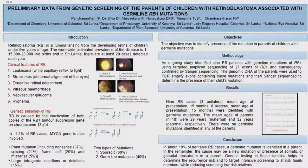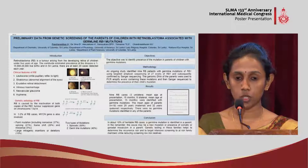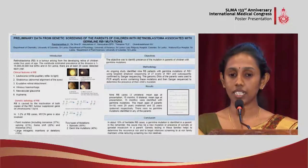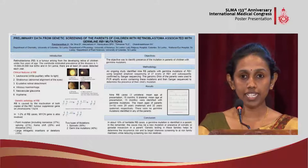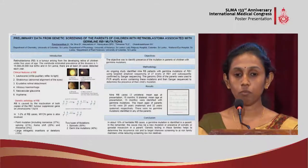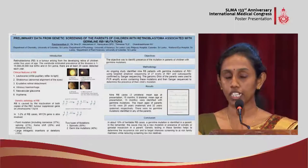Hereditary retinoblastoma is an autosomal dominant disease with germline mutation. 85% of cases have bilateral involvement and the remaining will be unilateral, and only 10% have a family history. The second type is non-hereditary retinoblastoma, where most cases are unilateral.